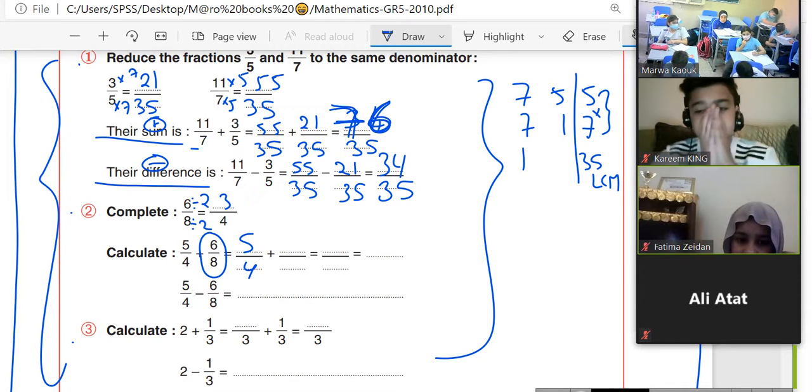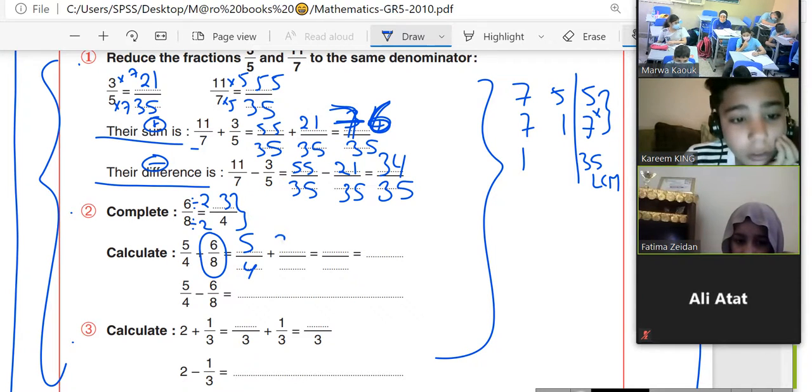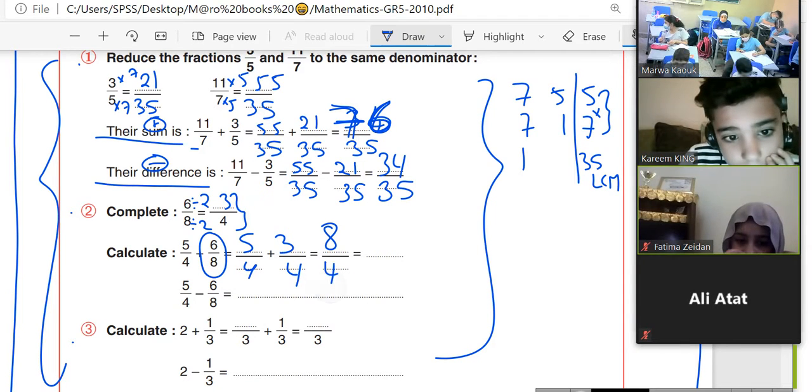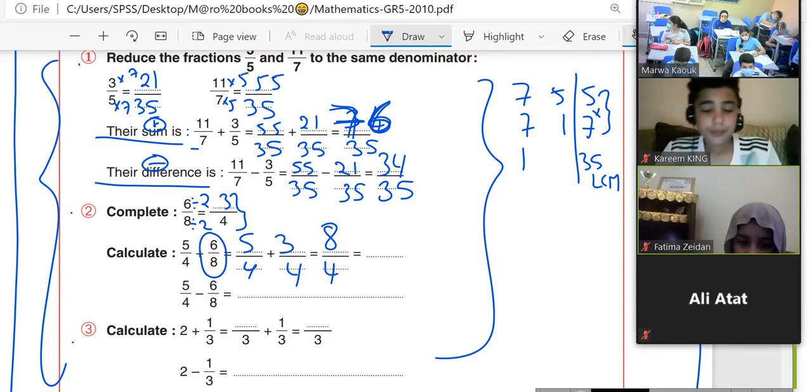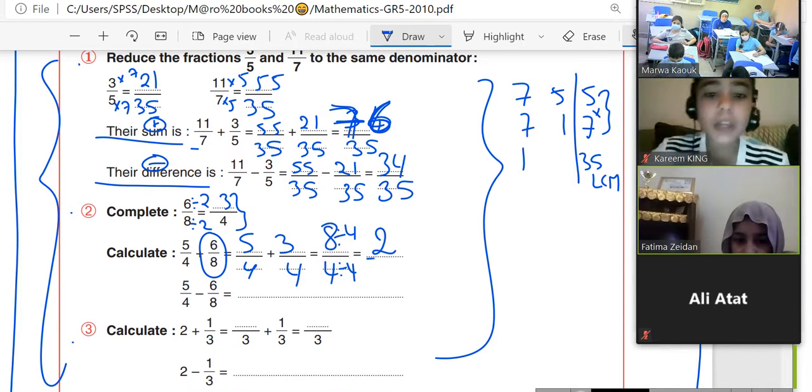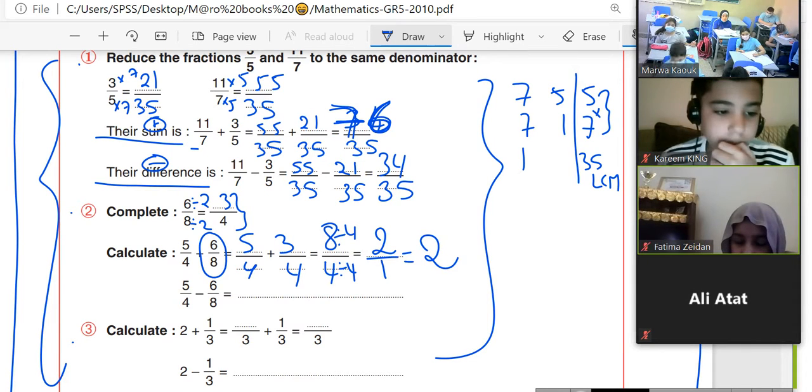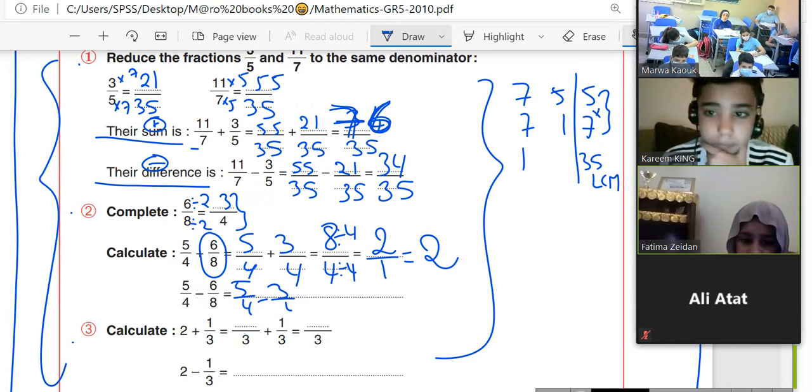Same denominator. What will I do? 3 over 4, it will be 8 over 4, it's equal to what? 8 divide 4 equal to 2, equal to 2 over 1. Next is Sihon, 5 over 4 minus 3 over 4.